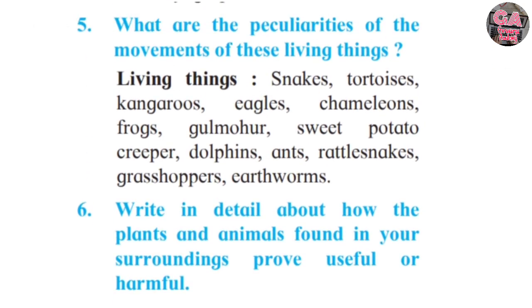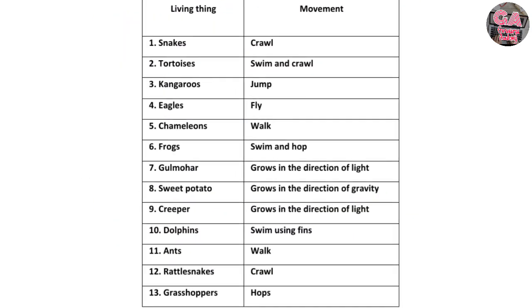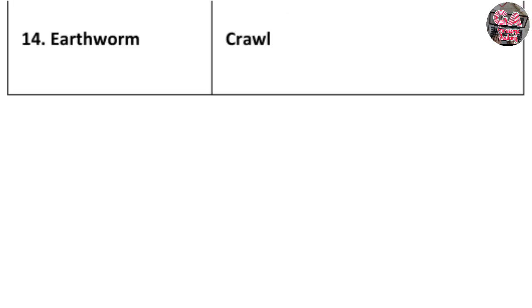Now question five: What are the peculiarities of the movements of these living things? Snakes — crawl. Tortoise — swim and crawl. Kangaroos — jump. Eagles — fly. Chameleons — walk. Frogs — swim and hop. Gulmohar — grows in the direction of light. Sweet potato — grows in the direction of gravity. Creeper — grows in the direction of light. Dolphins — swim using fins. Ants — walk. Rattlesnake — crawl. Grasshopper — hops. Earthworm — crawls.